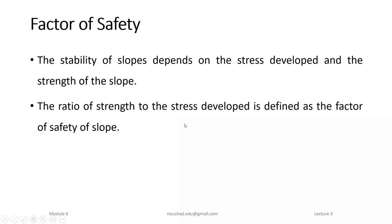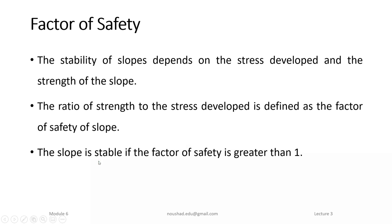The factor of safety is defined as the ratio of the strength to the stress developed. If the factor of safety of the slope is one or greater than one, the slope is stable. If the factor of safety is less than one, the slope will be in a danger condition and there is a chance of failure.